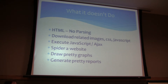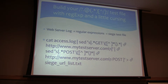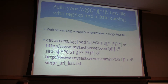It doesn't draw pretty graphs and it doesn't generate pretty reports. You give it a list of URLs and it runs them as fast as it can. So how do you make this list of URLs?